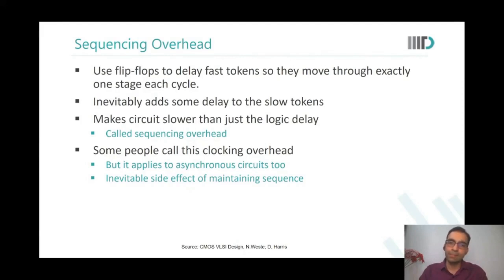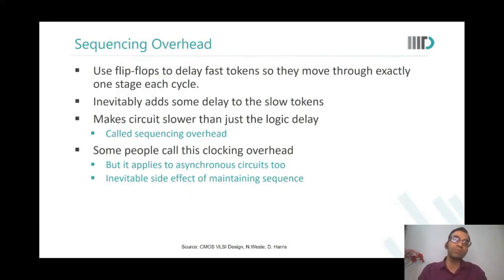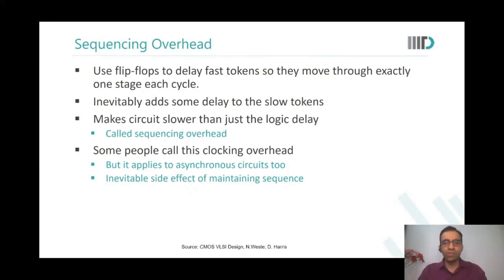At system level we typically do know the slower and faster paths, but at the time of writing RTL we may not know, so you put flops everywhere and then synthesize. Before synthesis we may not really know which paths are fast or slow, because during synthesis some paths will be converted to faster paths by using faster cells. So in RTL itself we put flops at all places.